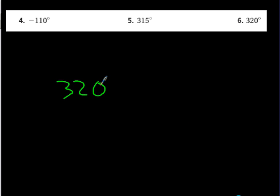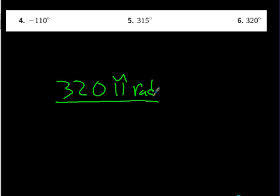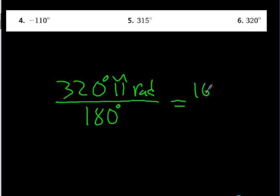Number 6: 320 degrees times pi radians over 180 degrees. Again, just do that division on the calculator. It simplifies to 16 over 9, so the answer is 16π/9 radians.